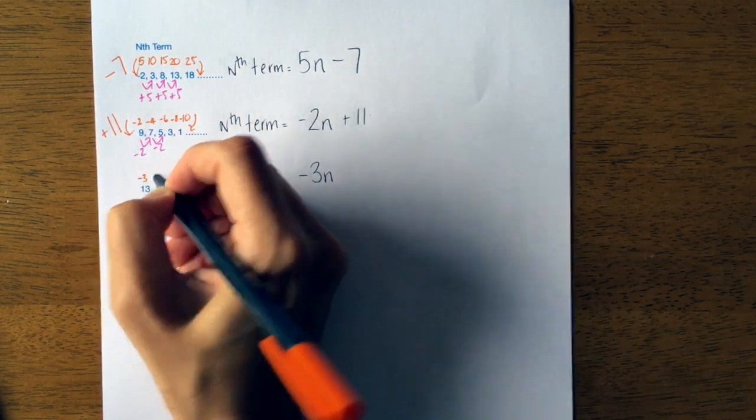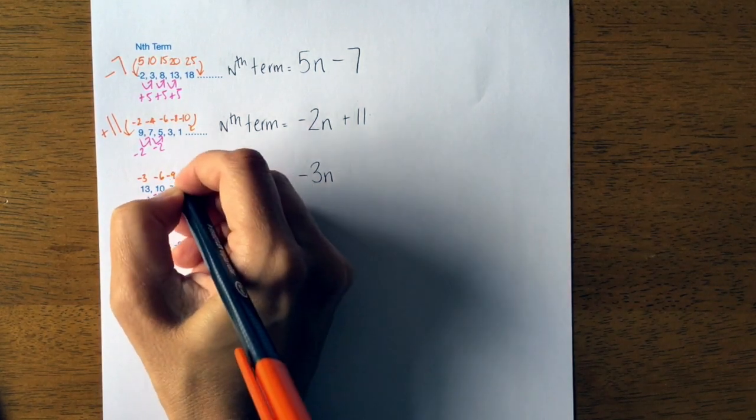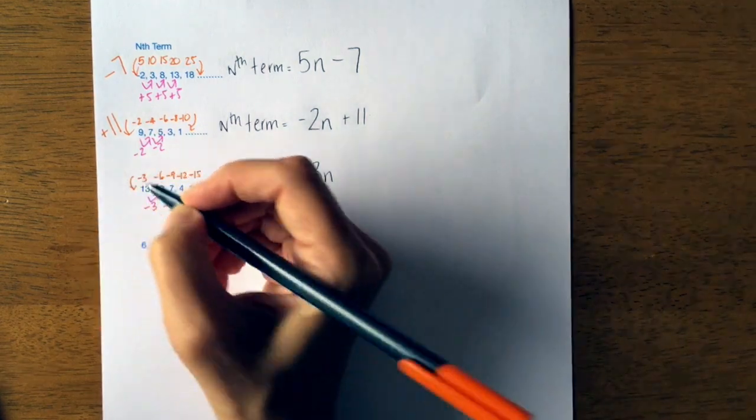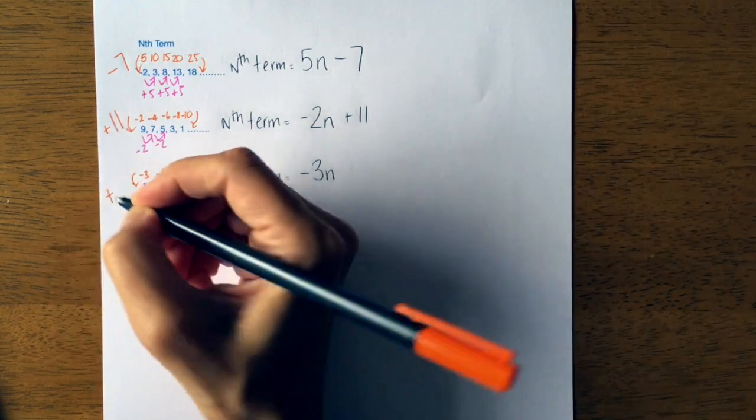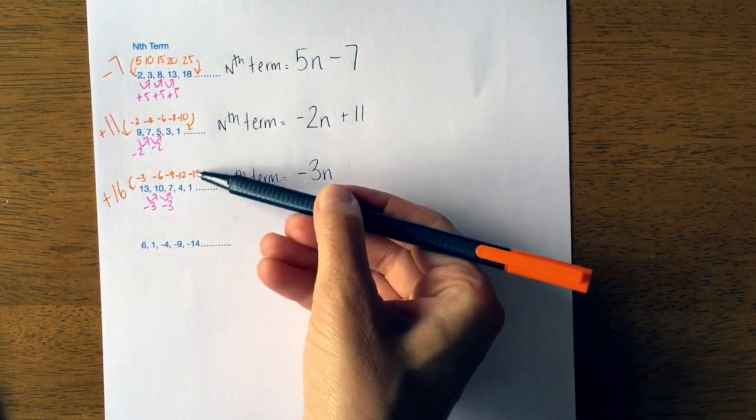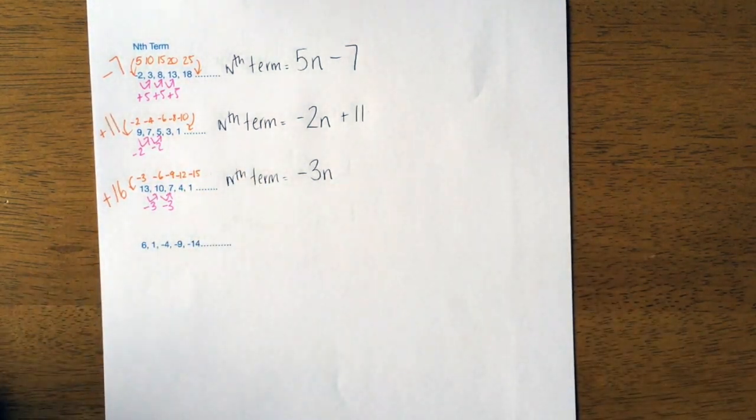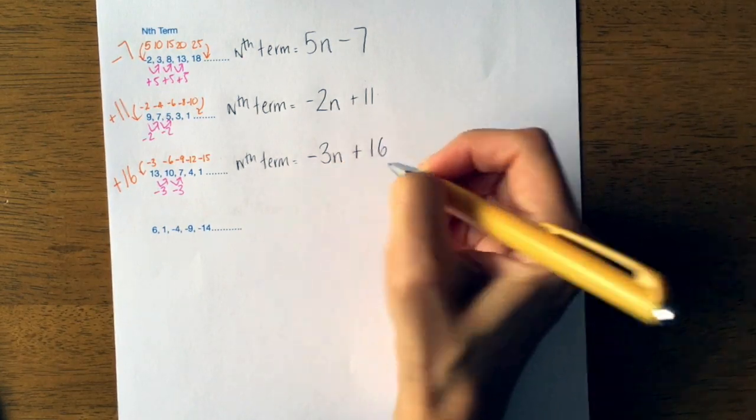So negative 3, negative 6, negative 9, negative 12, negative 15. How would I get from negative 3 to 13? I would need to add on 16. Does that work? Yeah, let's check this one: negative 15 plus 16 gives me the 1. So on the end here I would need to write plus 16.